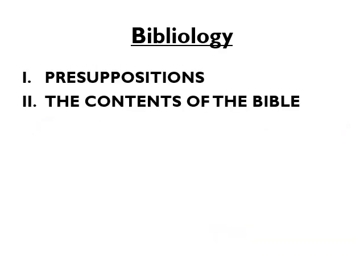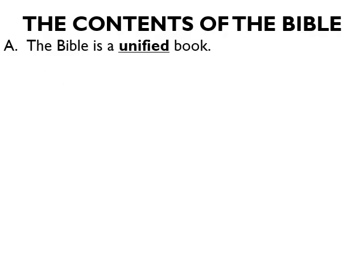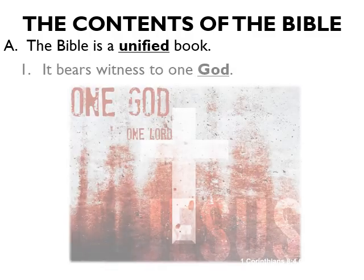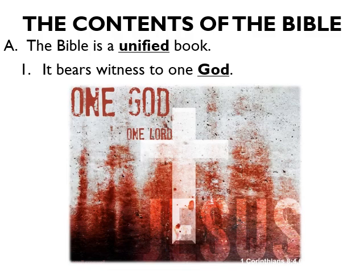Now that we've discussed the two presuppositions to understanding the Bible, let's move on to Roman numeral 2: what are the contents of the Bible? Firstly, the Bible is a unified book, unified in six specific ways. First, it bears witness to one God. Christianity is a monotheistic religion — we believe in one God who has manifested Himself in three separate persons: God the Father, God the Son, and God the Spirit.